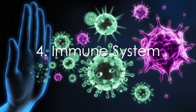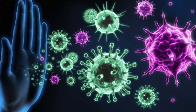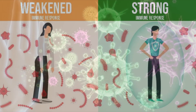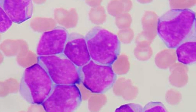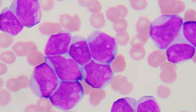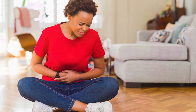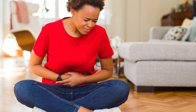Number four: immune system. The immune system plays a role in the development of endometriosis as well. A weakened immune system may not be able to recognize and eliminate endometrial cells that have migrated outside of the uterus, leading to growth and spread of the tissue. It is also possible that a hyperactive immune system may attack endometrial tissue in the pelvic cavity, leading to inflammation and pain.